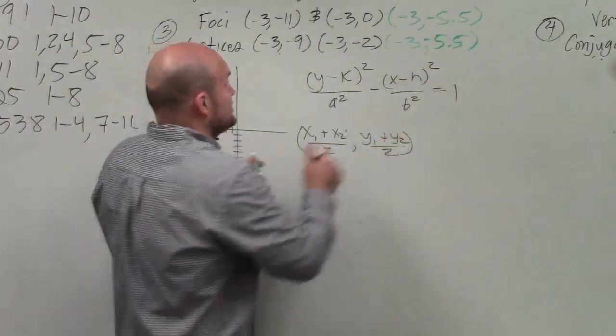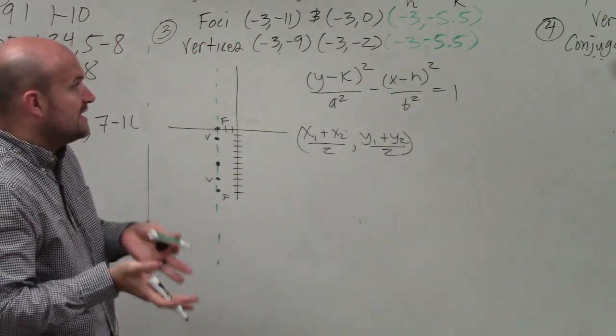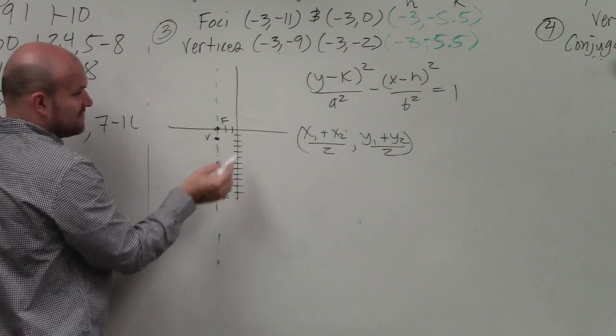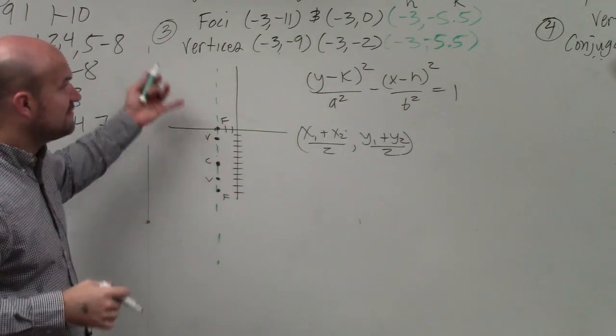So remember, that's your h, and that's your k. So now we need to figure out what is a. a is the distance from the center, which is right there, to my vertices.